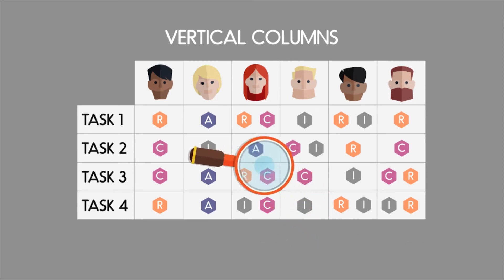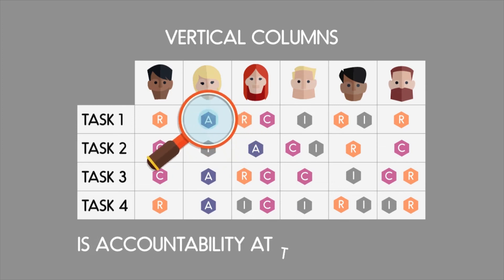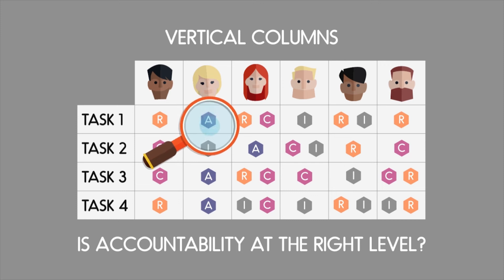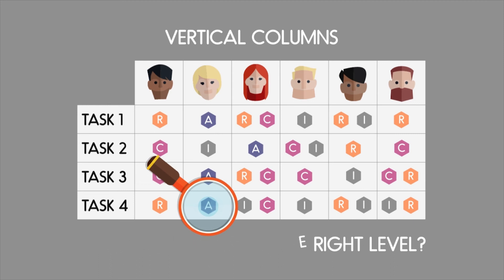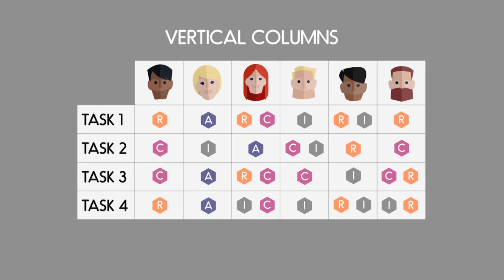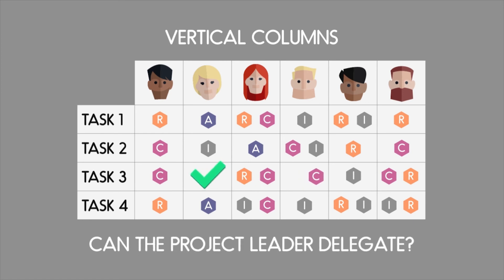With too many As, the project leader needs to question whether accountability is at the right level. Is the person allocated with all those As the right person with the right authority to do the job and ultimately sign off each of the tasks? This often occurs in large, hierarchical organizations. Can the project leader delegate out accountability to other levels of the organization?